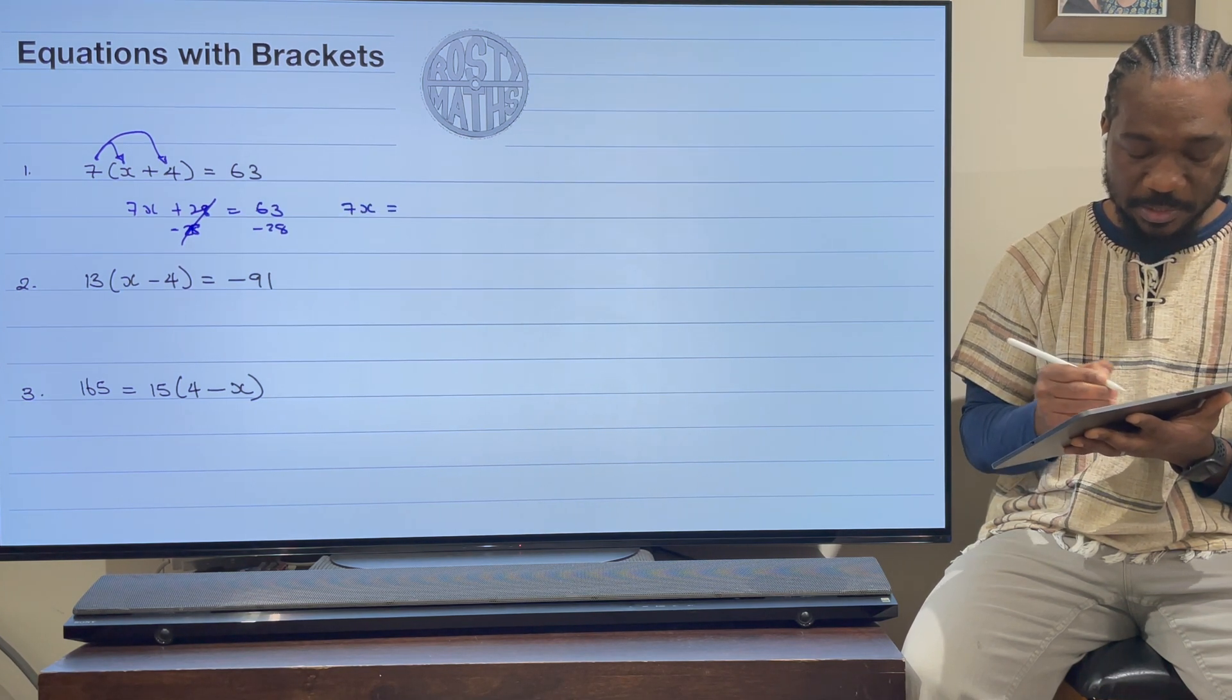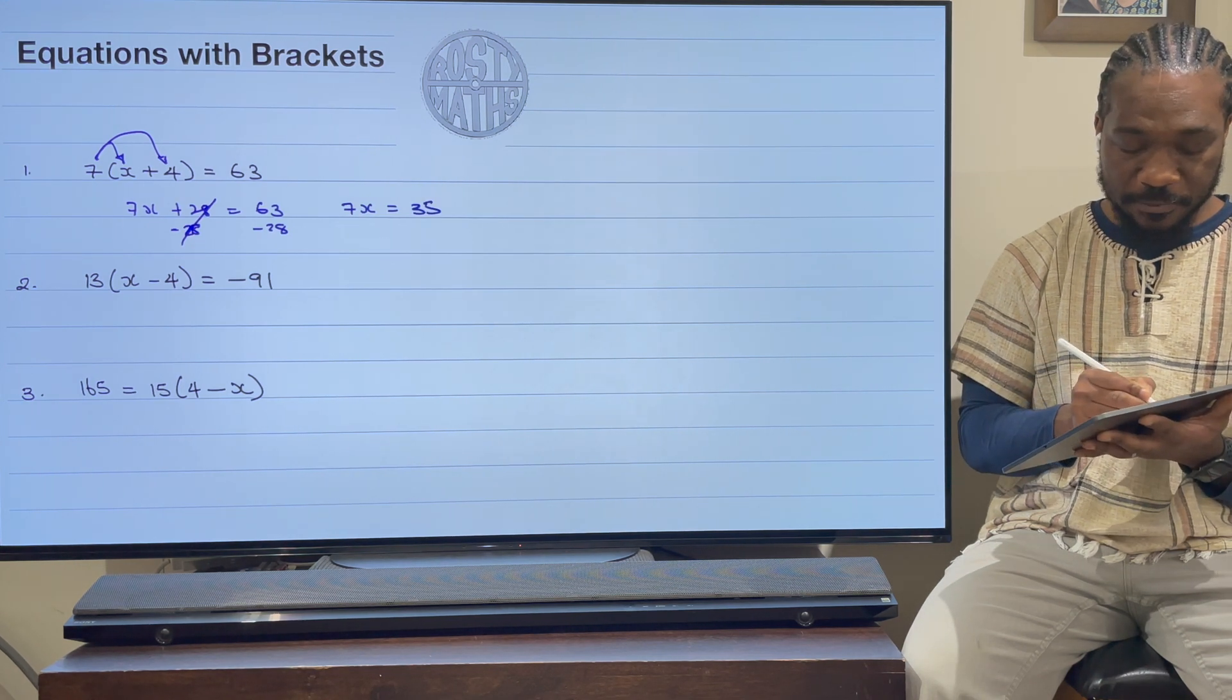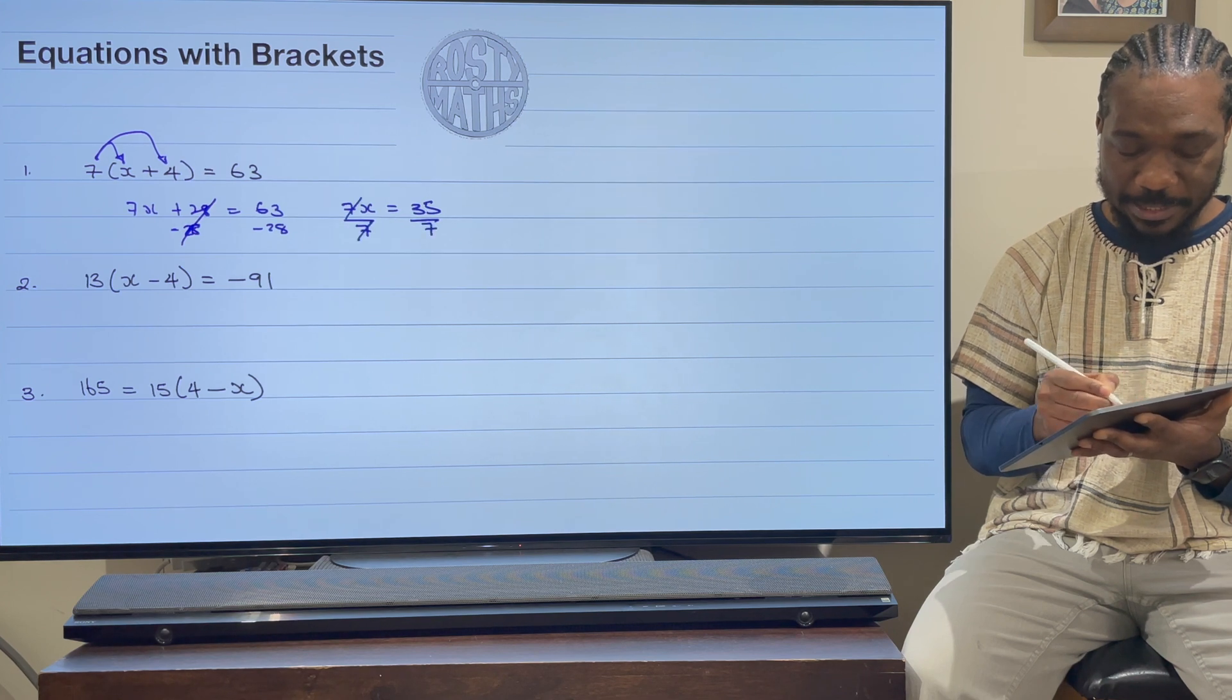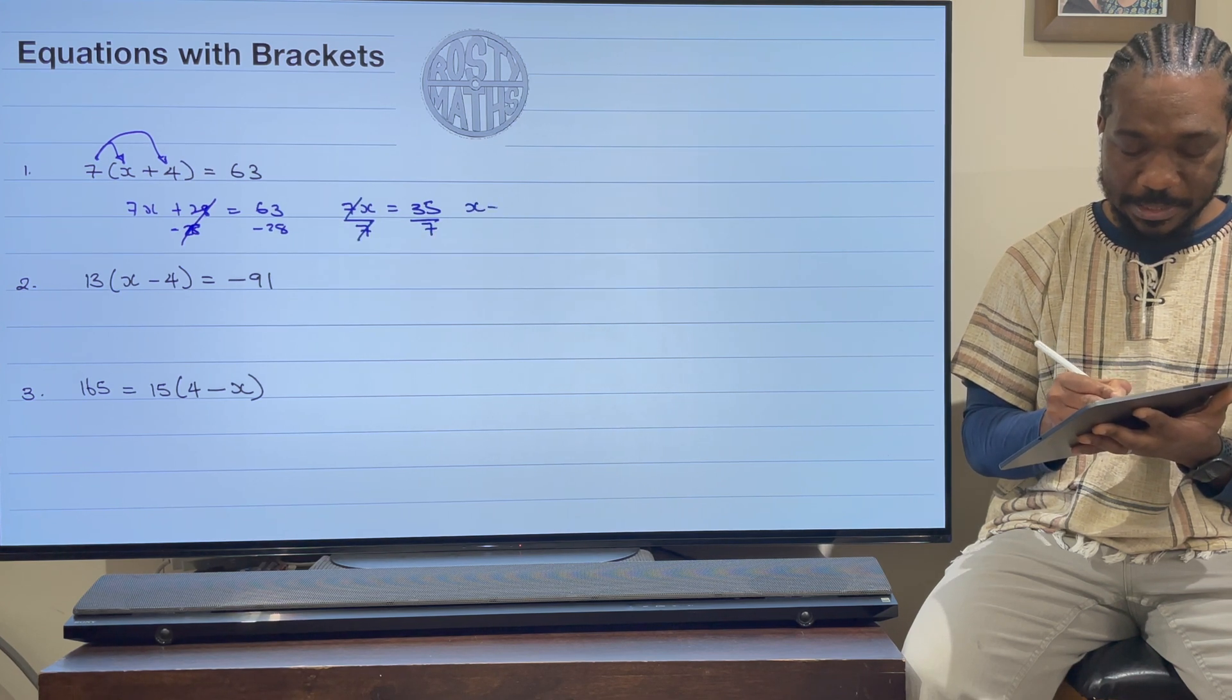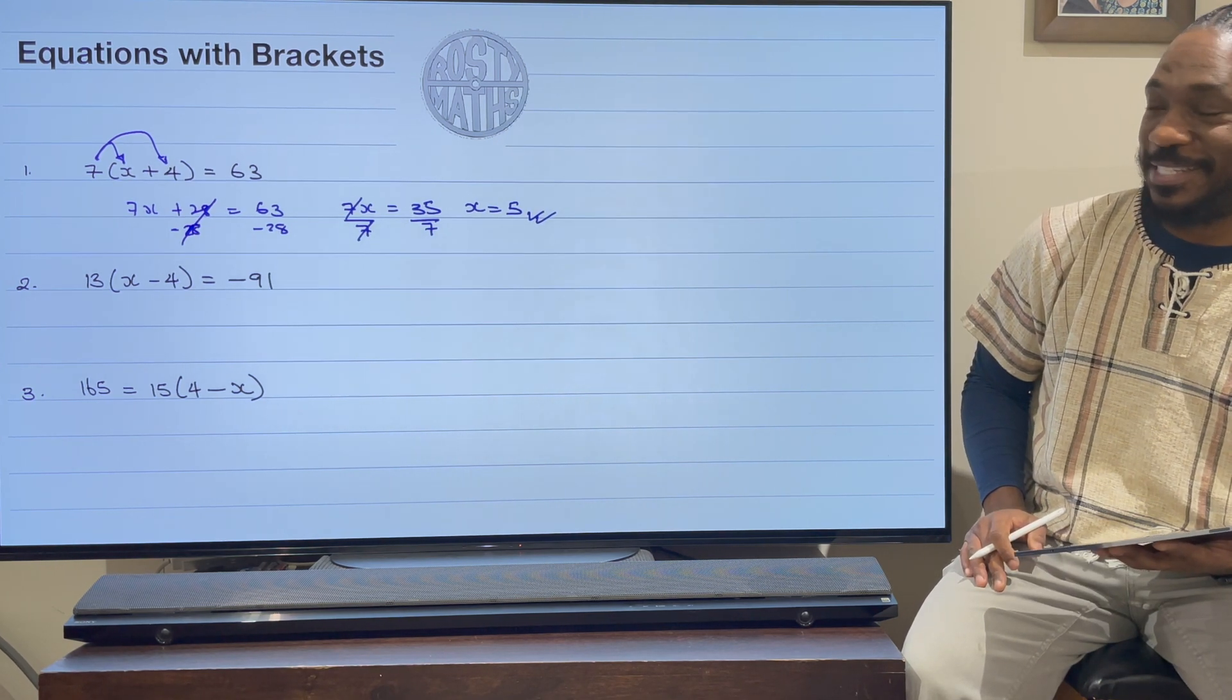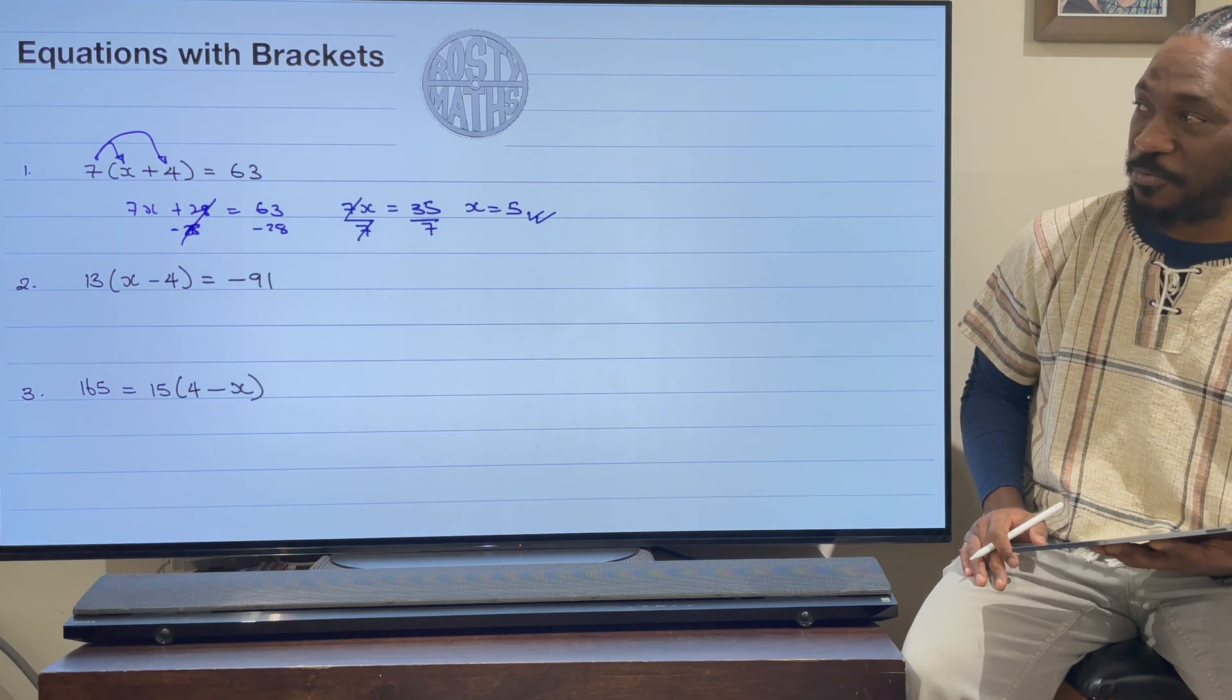So that will cancel out there, and I'll be left with 7x is going to be equal to 35. And then I'll finish off by dividing by 7. That cancels out, and then x is equal to 5. This is now finished right here.